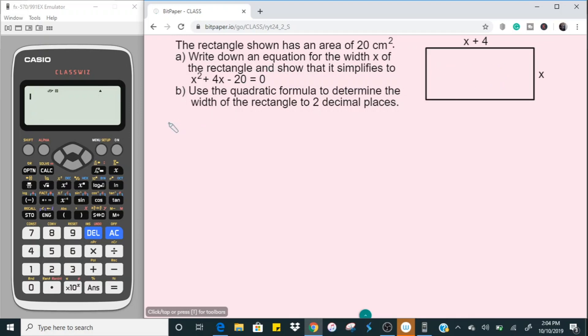So let's begin with the first one to write down an equation for the width x. Now we know the area of a rectangle can be calculated as the length times the width. Now we know the area to be 20 centimeters squared and the length is x plus 4. I like to put that in brackets then multiply by the width. Now the width here is x. So this really gives us the equation for the width x.